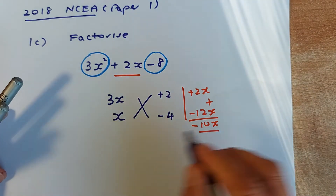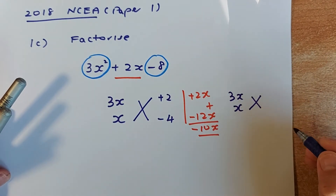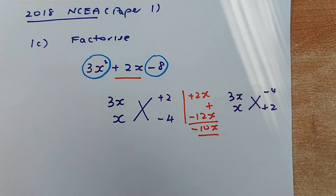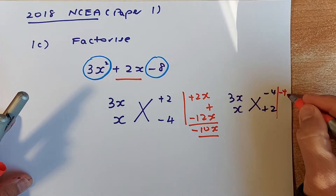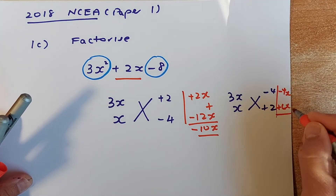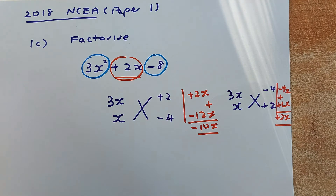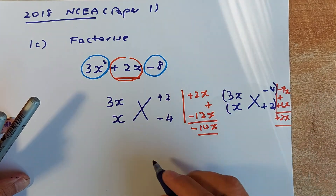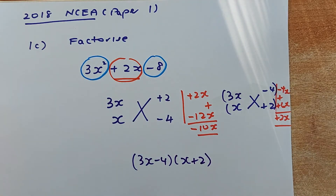Next possibility: try negative 4 and positive 2 swapped. Cross multiply: x times -4 is -4x, and 3x times 2 is +6x. Add them together: -4x plus 6x is +2x — that matches! So the next step is to put brackets around it. The answer is (3x - 4)(x + 2). This is the trial and error method.